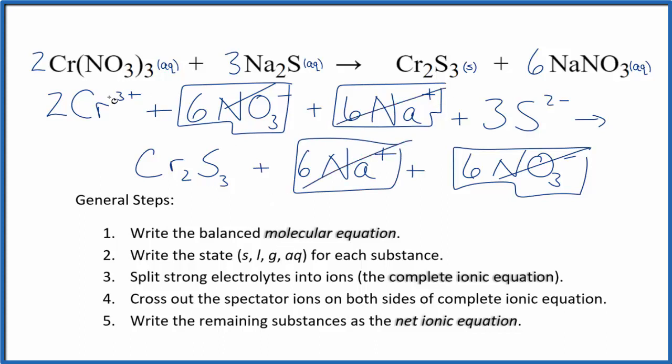What's left is the net ionic equation for Cr(NO3)3 plus Na2S. I'll clean this up, put the states in, and we'll have our net ionic equation.